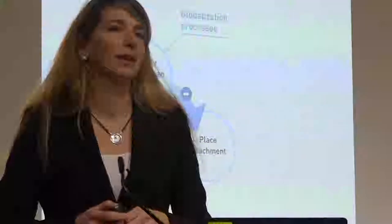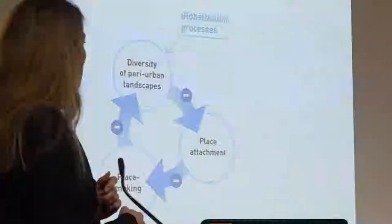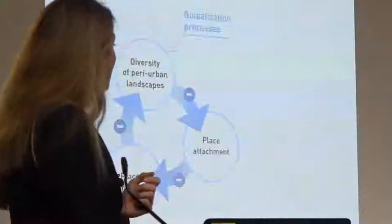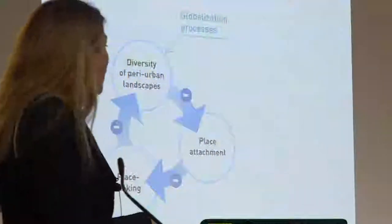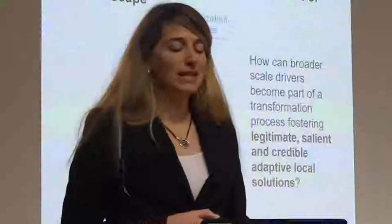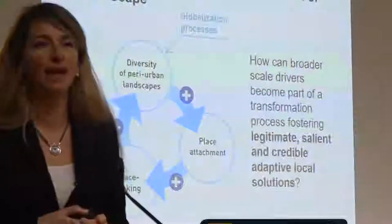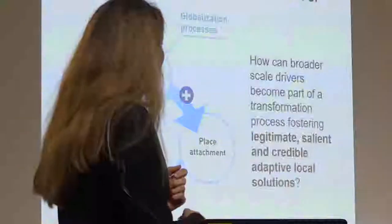It is kind of a vicious circle, where we have these globalization processes which impact the diversity. As we've seen, it looks all the same. And this negatively impacts the attachment to the place, how people get attached to the place, and finally, placemaking. So the question is, can we reverse this vicious circle? How can we break it?